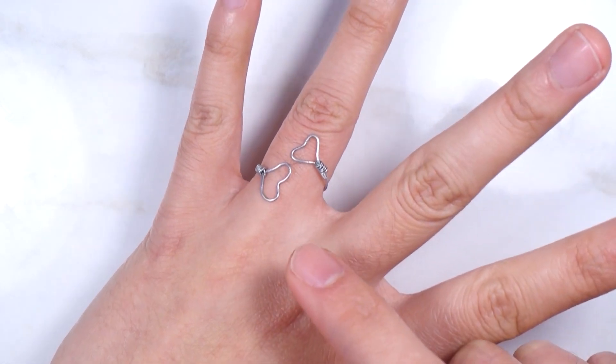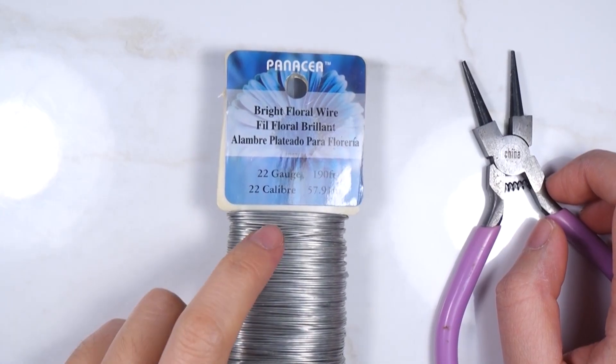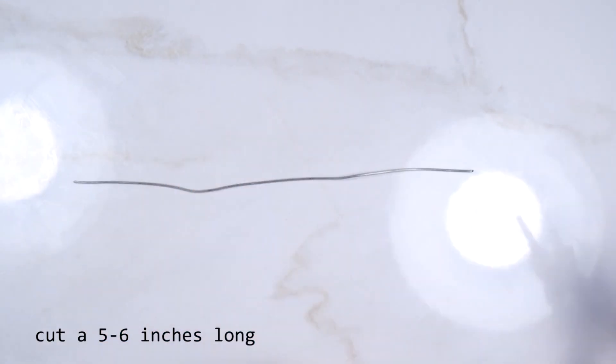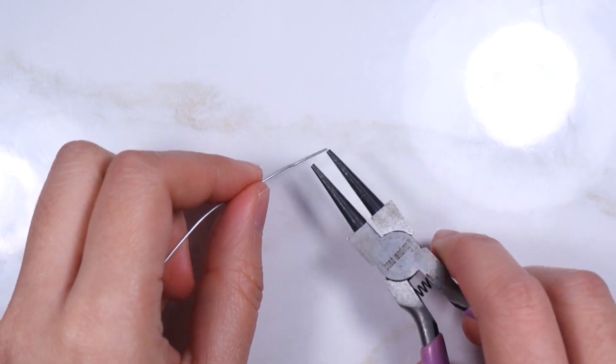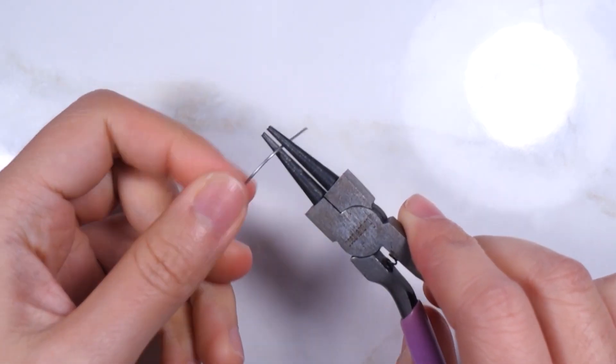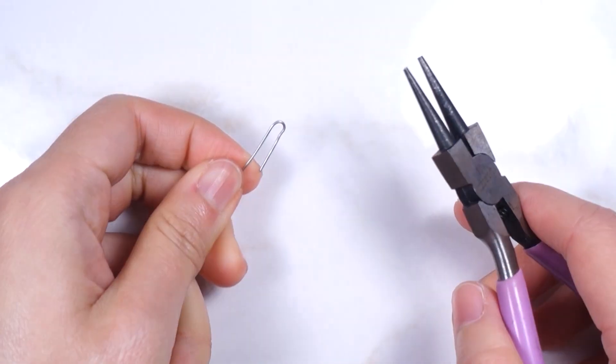Next, we will make this two heart ring. For this one, use 22 gauge wire and cut it at about 5 to 6 inches long. I like to start making a heart on one end first. This is a bit difficult to explain, so please just watch what I am doing here on making the heart shape.